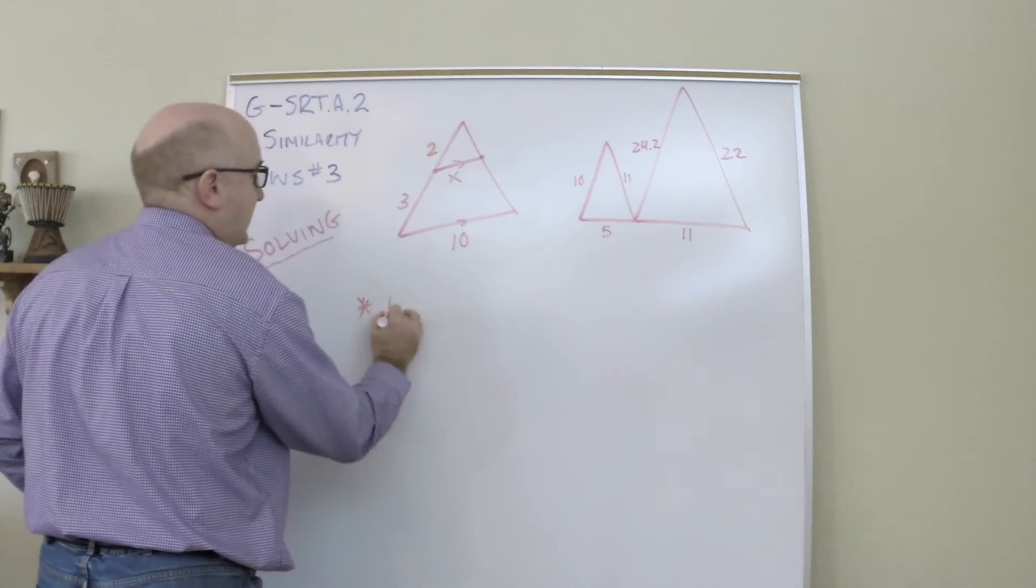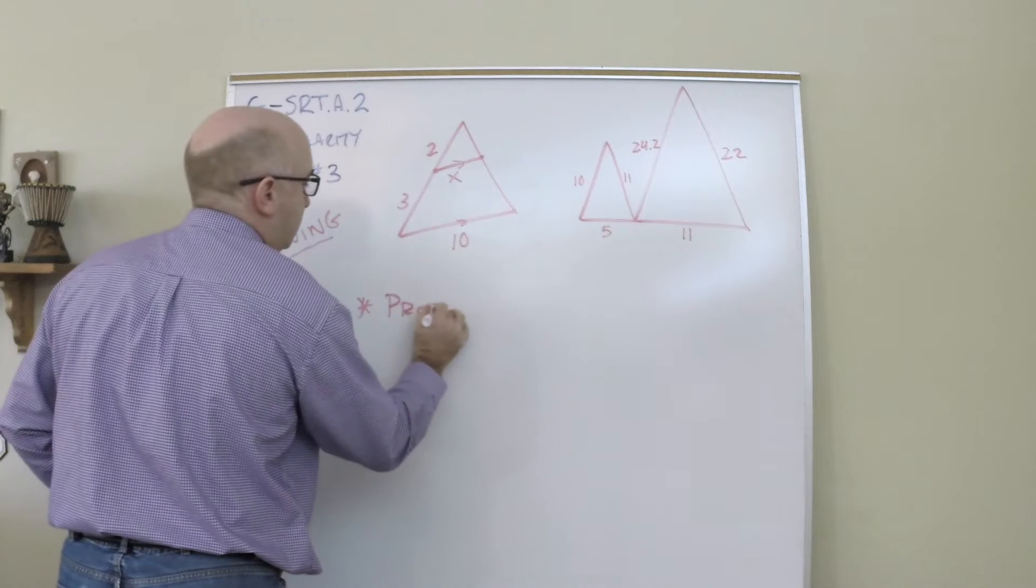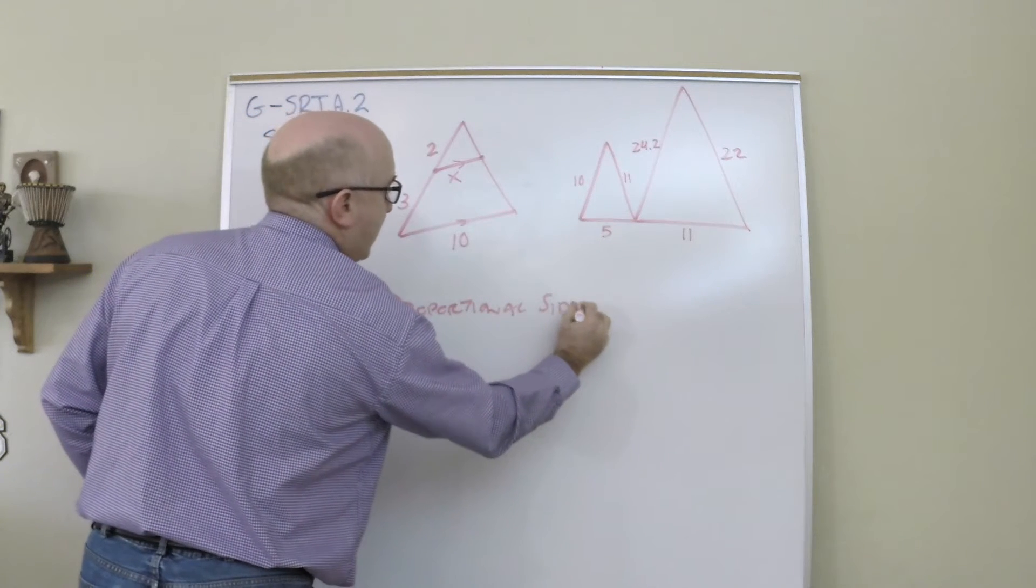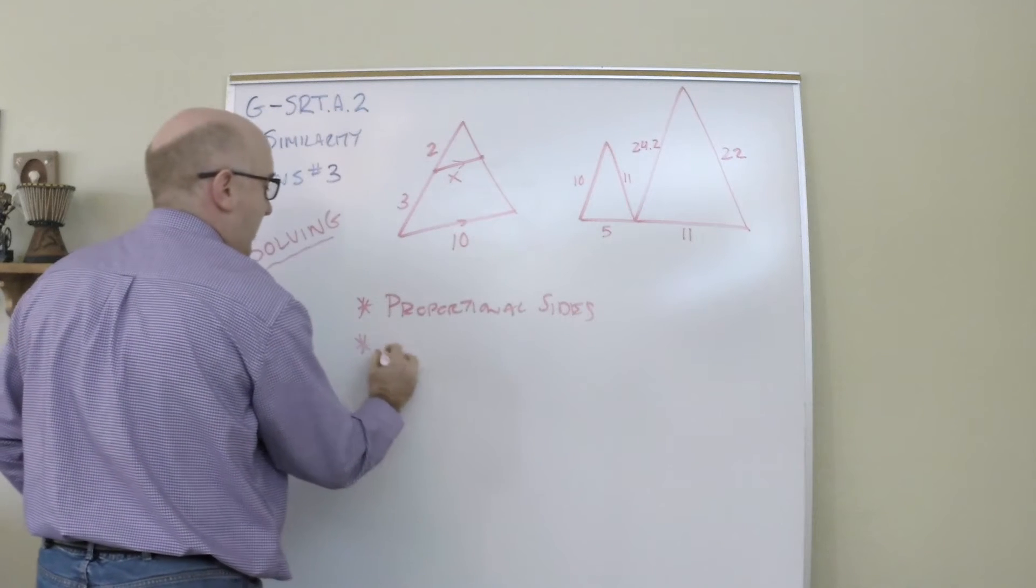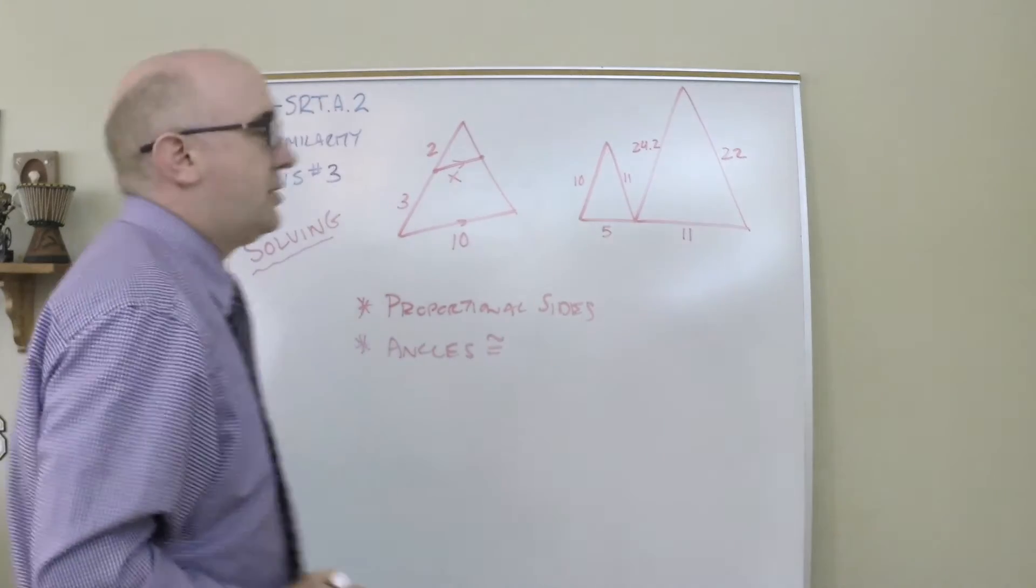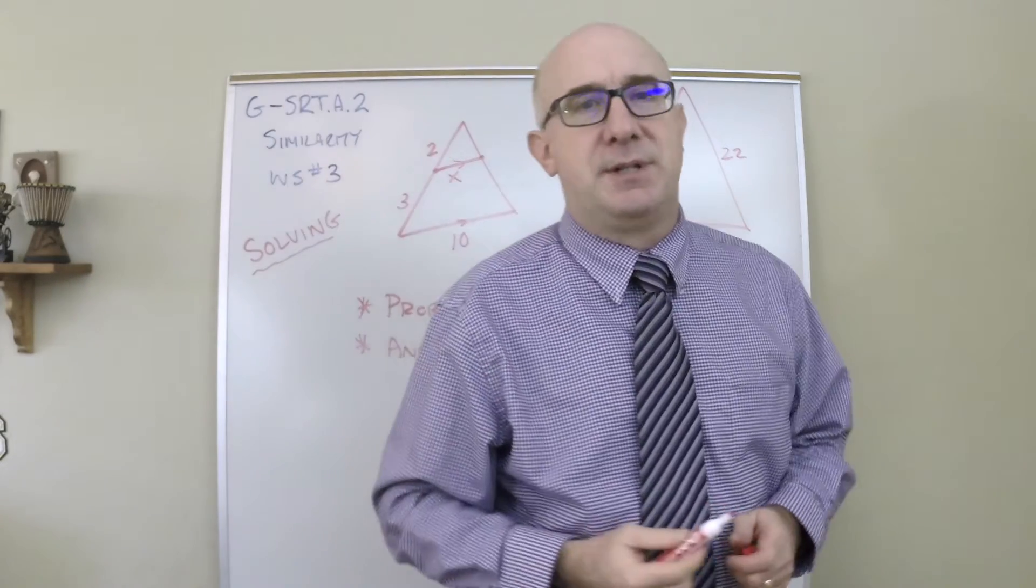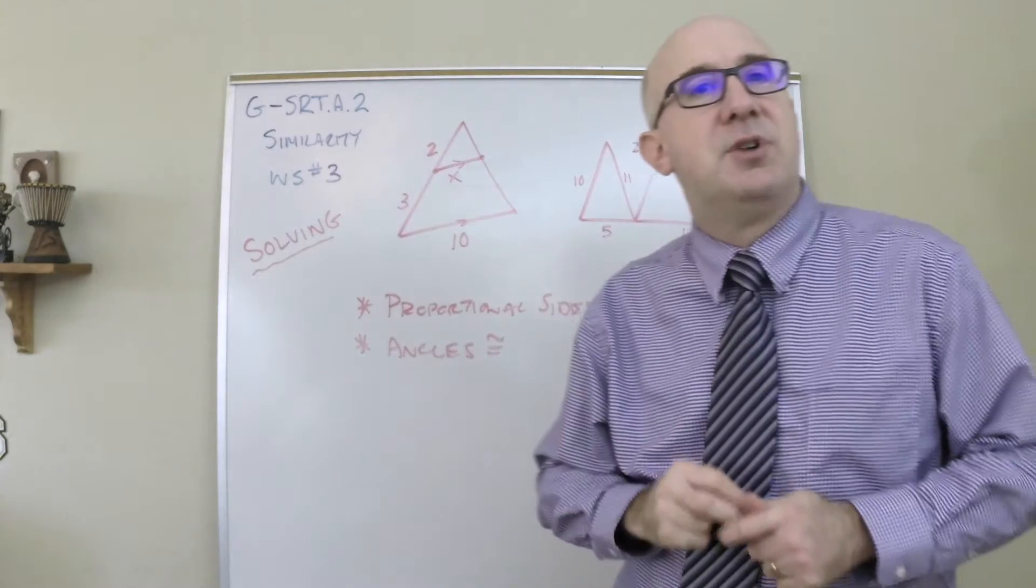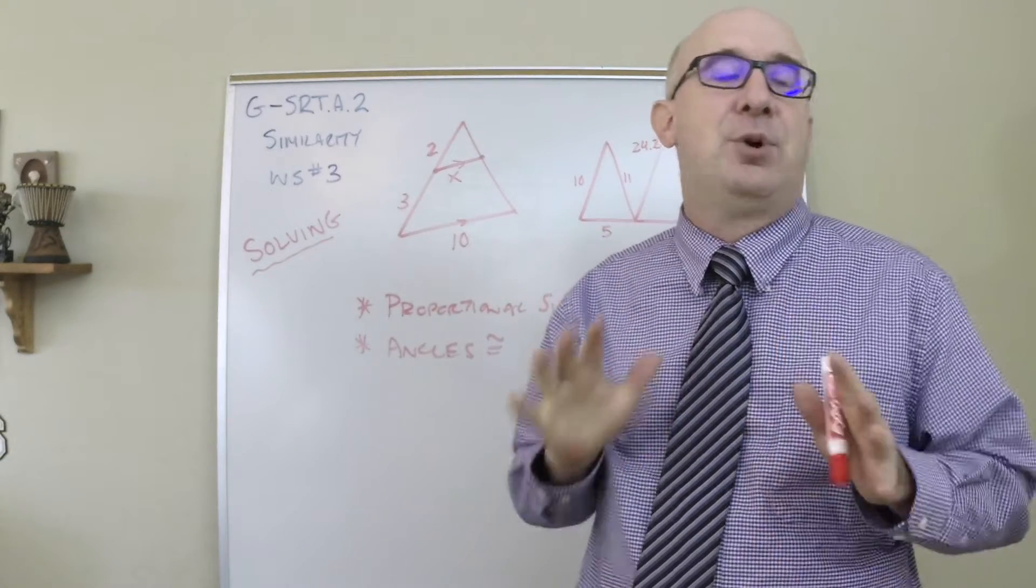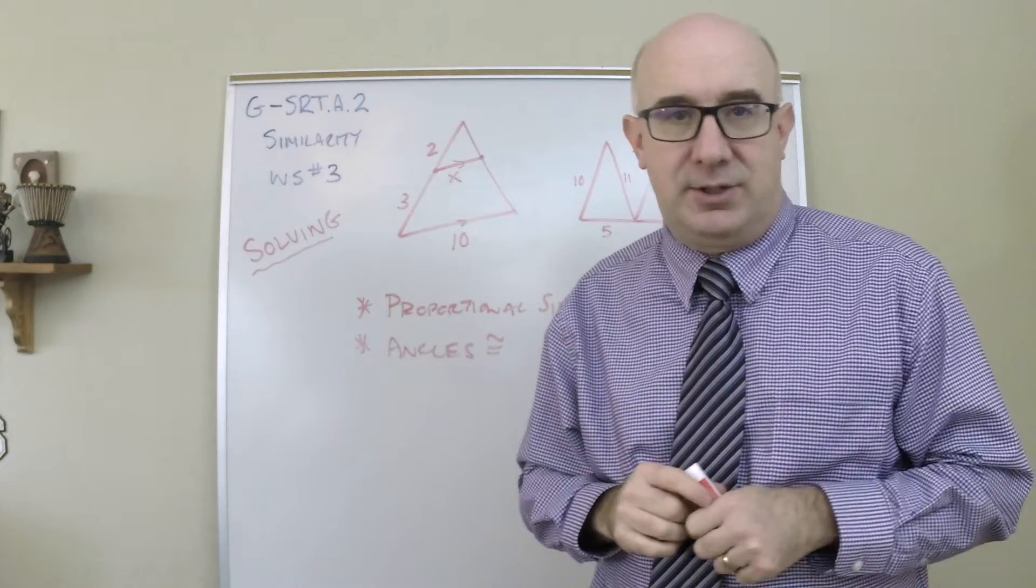Once you know that, you have two things that you can work with. You can work with the fact that sides are proportional, and the second thing that you might be asked about is angles, and angles are congruent. So we'll look at some specific examples of the business of solving. I want to get to two of the typical errors or pitfalls that students find here.